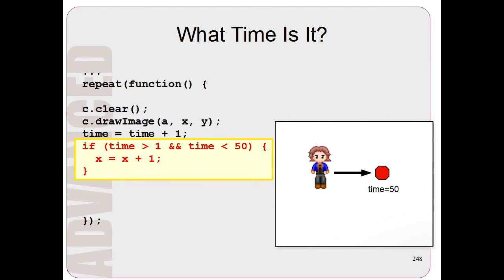So we still have this x equals x plus 1, but we'll add this if time is greater than 1 and time is less than 50. So basically, the person will only move to the right when time is between 1 and 50.